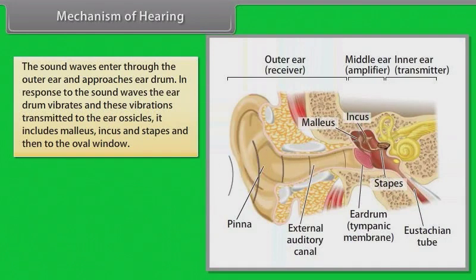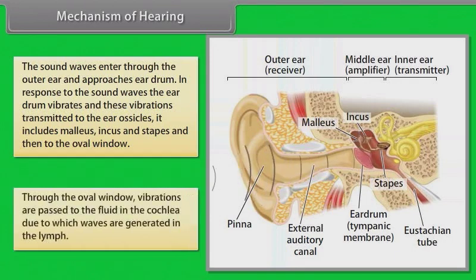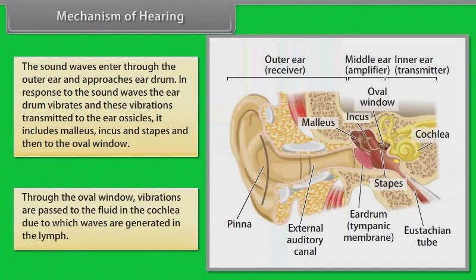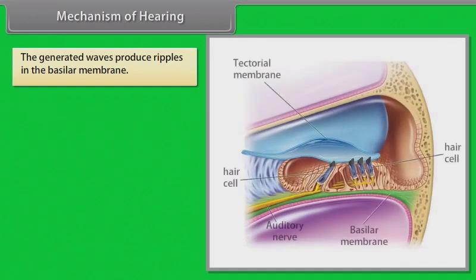Sound waves enter through the outer ear and approach the eardrum. In response to the sound waves, the eardrum vibrates and these vibrations are transmitted to the ear ossicles — the malleus, incus, and stapes — and then to the oval window. Through the oval window, vibrations are passed to the fluid in the cochlea, generating waves in the lymph which produce ripples in the basilar membrane.